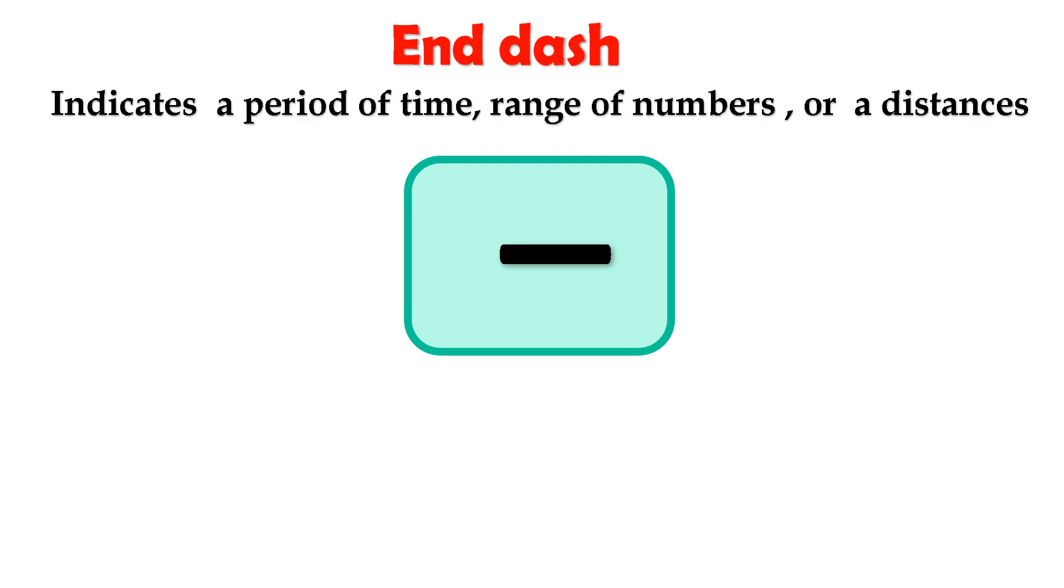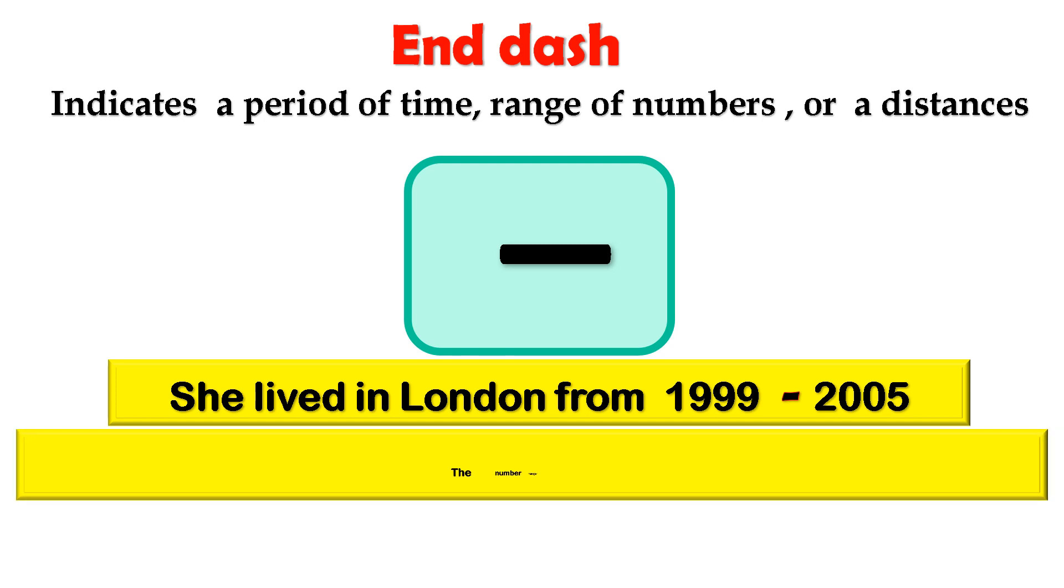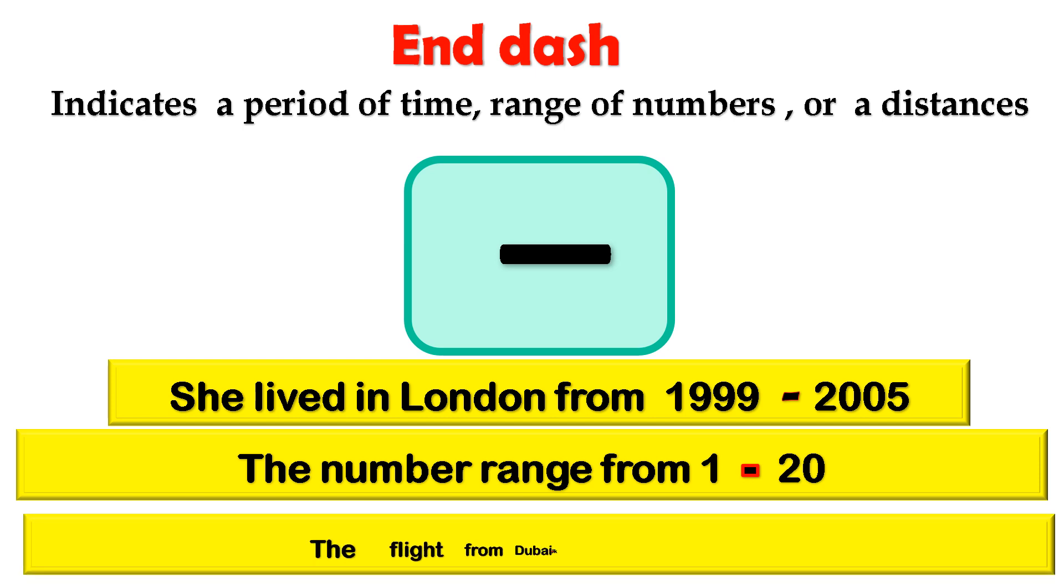En dash. An en dash indicates a period of time, range of numbers, or a distance. For example, she lived in London from 1999 to 2005. The numbers range from 1 to 20. The flight from Dubai to UK is very long.